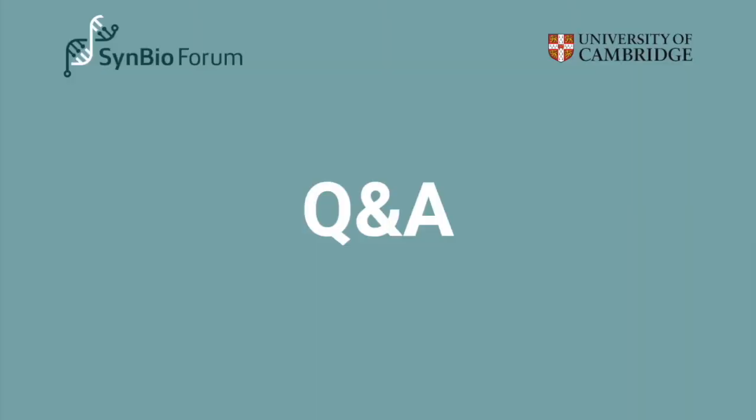Thanks, Drew. For questions, you can raise your hand or write something in the Q&A. Let me get the ball rolling — a question first for Gavin, then for Drew. Gavin, I was really impressed by the way you identified downside differentiators as a motivation for sharing: where you've got this need for assurance, safety, or reliability, it provides a motivation for collective security in terms of development. Could you expand a little more on that? I think there might be some opportunities to explore it in biology too.